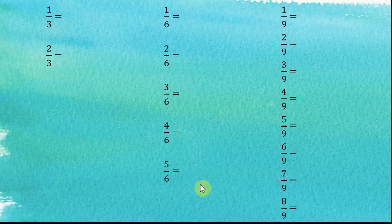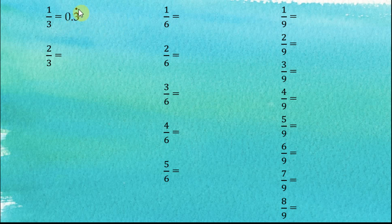Let's continue with fraction numbers where the denominator is 3, 6, and 9. 1 over 3 equals 0.3333..., or we write it as 0.3 recurring, where we put a dot or sometimes a bar on top of the number 3. 2 over 3 equals 0.6 recurring. These two are easy.